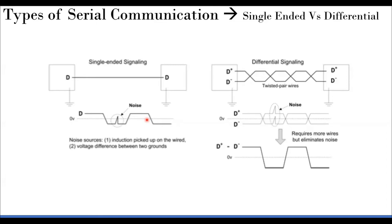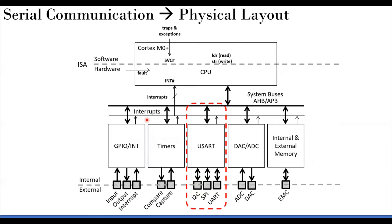Now let's revisit the microcontroller architecture chart. You have software, the ALU/CPU hardware core, the bus, interface controllers/registers/memory, and pin layout with multiplexing, then the external environment. Peripheral devices communicate to the CPU through the advanced peripheral bus or through interrupts. We have discussed GPIO and timers; now it's time to visit the USART — Universal Synchronous Asynchronous Receiver Transmitter module.